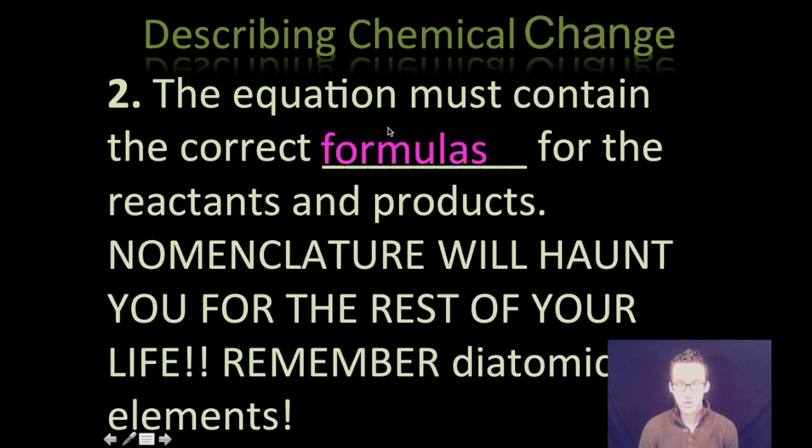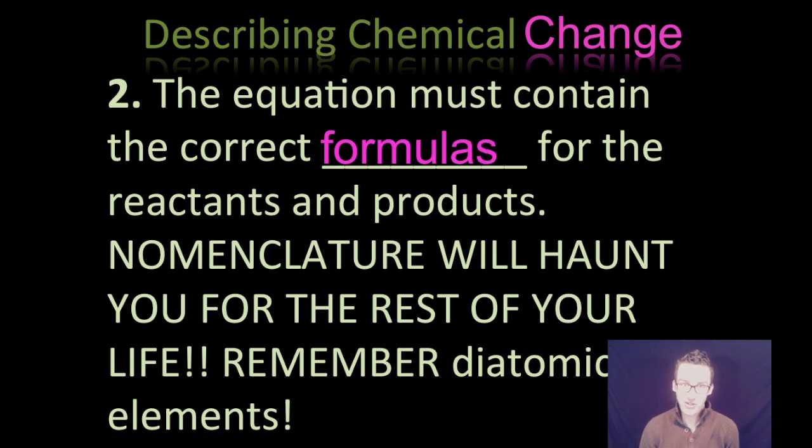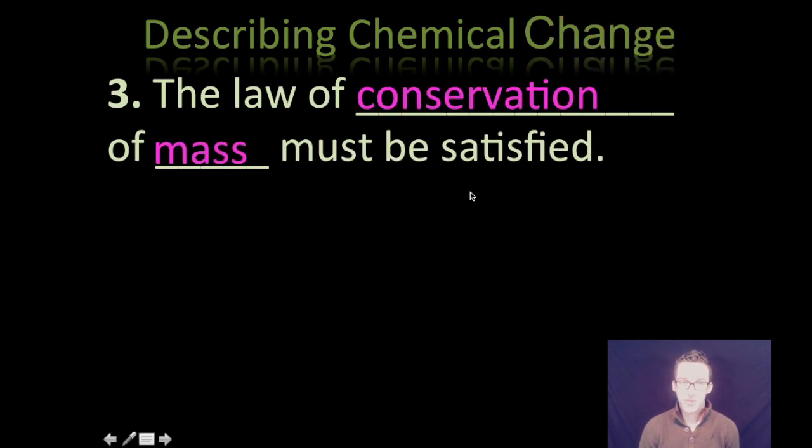Two, your equation must also contain the correct formulas for your reactants and products. Again, nomenclature is going to haunt you for the rest of your life. Nomenclature. Nomenclature. Also don't forget your diatomic elements. When you are working with, for example, oxygen gas as a reactant or a product or hydrogen gas, you need to make sure that you include it as a diatomic element.